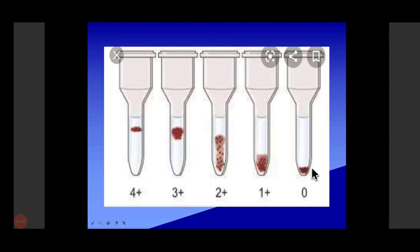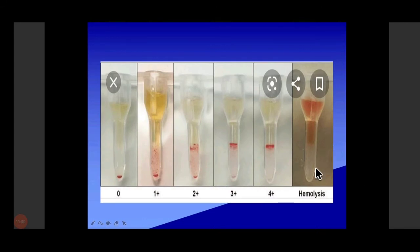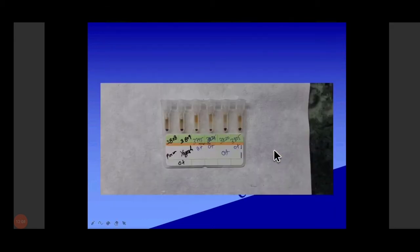At plus-or-minus, if the cells settle down to the bottom, then we can transfuse the blood. It is compatible because there is no settling of blood at the upper side. Here also you can see hemolysis — full red color — it is 4+, so it is unsafe. We should not give this sample. Here also it is compatible — you can see all settling at the bottom.